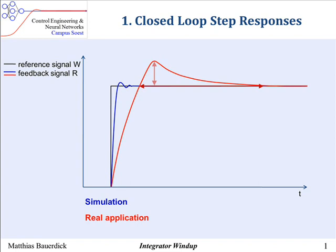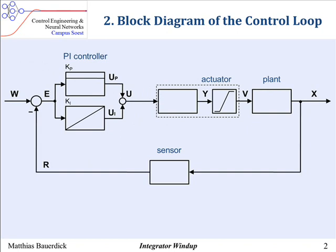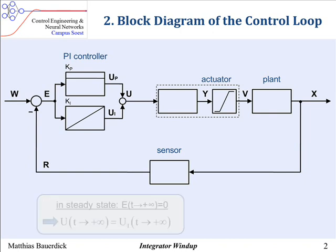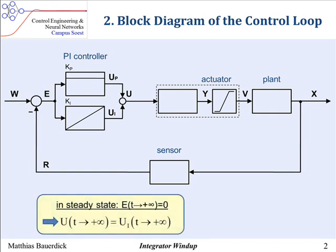To explain it in detail, let's go back to the block diagram of the control loop. The controller is a PI controller whereby the integrator is responsible for a steady state error of zero. Subsequently in steady state, the proportional part of the controller output UP is also zero, and only the integrator output UI contributes the entire controller output U.